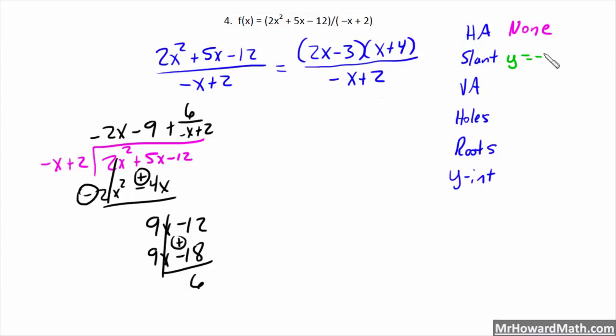So, we'll write that in here. Y equals negative 2x minus 9. So, this is an imaginary line with a slope of negative 2 and a y-intercept of negative 9 that we will graph in there. It's not actually a part of the graph. It's just used to identify the slant asymptote.